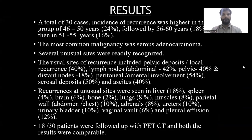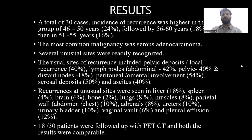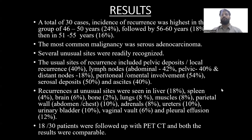Looking at the results from 30 cases, the highest recurrence was in the 46 to 50 years age group, followed by 56 to 60 years, with a decrease in the 51 to 55 age group. The most common malignancy was serous adenocarcinoma. Several unusual sites were also recognized. For usual sites of recurrence, local recurrence with nodal involvement was highest, followed by nodal involvement alone — abdominal, pelvic, and distant nodes — with peritoneal and omental involvement scoring the highest percentage.